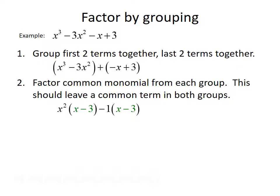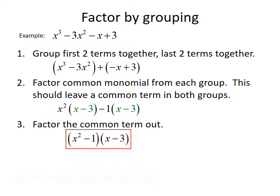The second step is to factor a common monomial out from each group, which should leave a common term in both groups. From the first group we factor out x squared, leaving x minus 3 inside. From the second group we factor out negative 1, also leaving x minus 3. Since x minus 3 appears in both groups, we know we've done things correctly. The final step is to factor out that common term x minus 3, leaving us with x squared minus 1 times x minus 3.